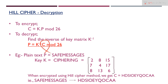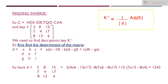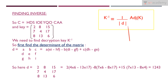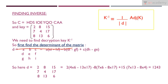We need to find the inverse of this key matrix. The equation to find the inverse is: K⁻¹ = (1/D) · adj(K) mod 26, where D is the determinant and adj(K) is the adjoint. The first step is to find the determinant of the matrix.